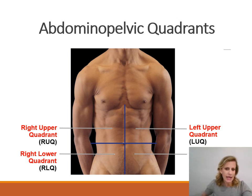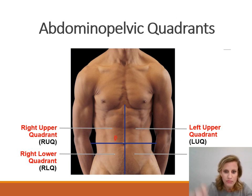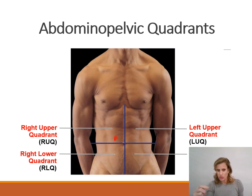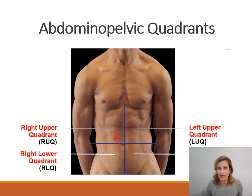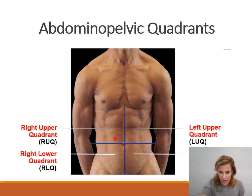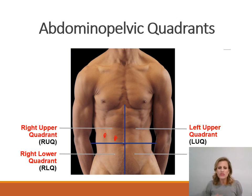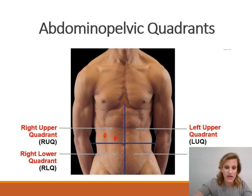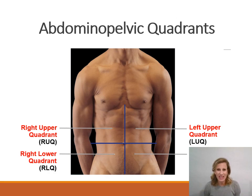For example, say a person had a stab wound right here. You could try to describe that by saying it's two inches above and two inches to the right of the belly button. But if this was a child, two inches above and two inches to the right would be in a completely different place because their abdominal region is smaller. So it's difficult to describe a specific location in the abdominal pelvic area. Dividing it up into quadrants or regions makes it a lot easier.